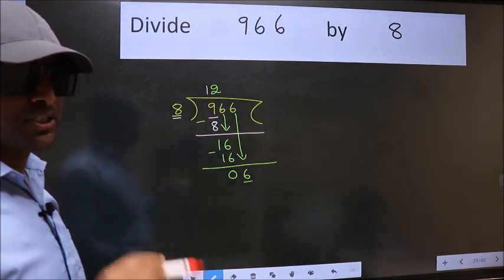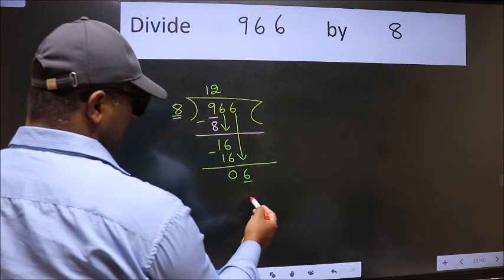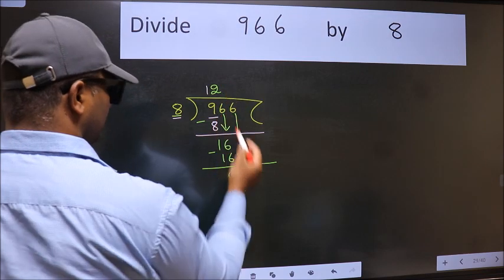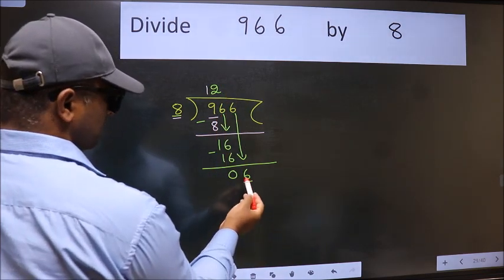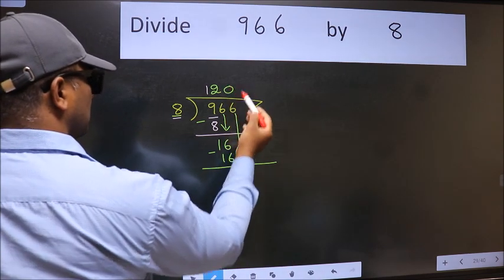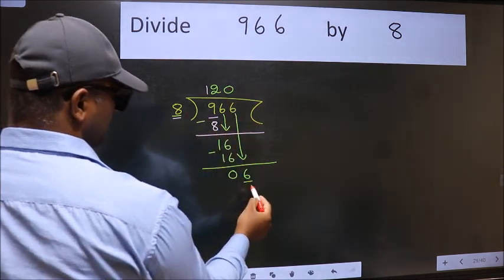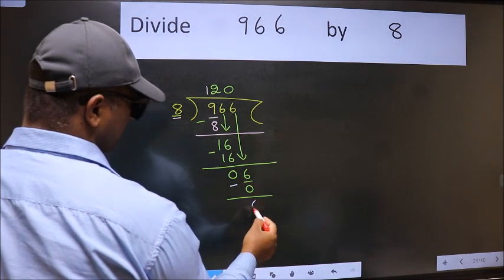Instead of that, what we should think of doing is which number should we take here? If I take 1, we will get 8. But 8 is larger than 6. So what we will do is we take 0. 8 into 0 is 0. Now we subtract. We get 6.